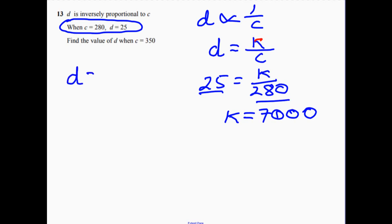but replace K with 7,000, because that's extra knowledge, and we know what it is. Right.